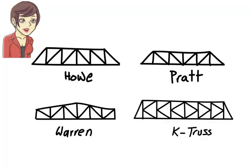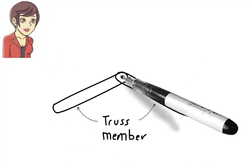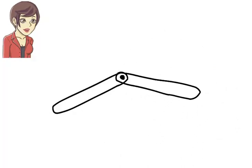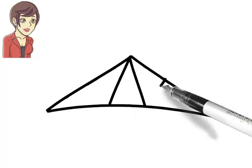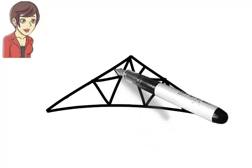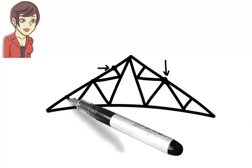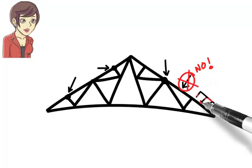Generally, we assume truss members are connected to each other using frictionless pins. This means if we have two truss members joined together, one has the freedom to rotate relative to the other. In other words, truss joints cannot resist any bending moment. Since neither the joints nor the members are designed to carry bending moment, applied loads need to be placed at the joints only. No load should be applied directly to the truss member itself.